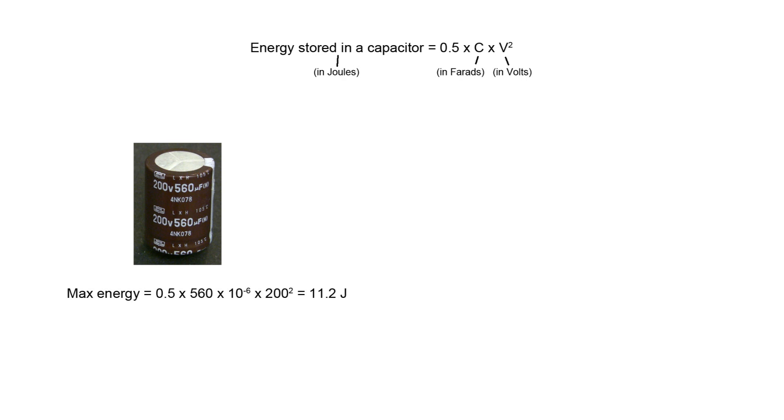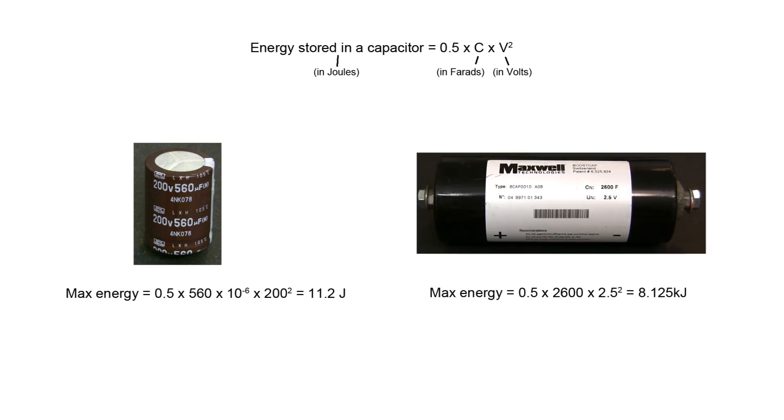In certain circumstances that's enough to do some serious damage. Now the ultracapacitors I bought are 2600 farads and that's not a mistake—2600 farads with a maximum of 2.5 volts. That means that one of these ultracapacitors can store 8.1 kilojoules of energy which is a ridiculous difference.